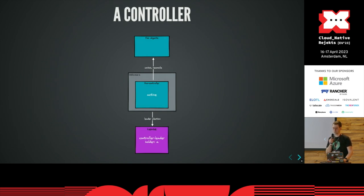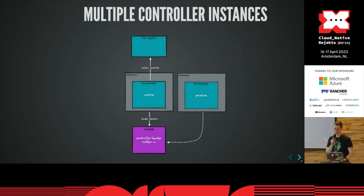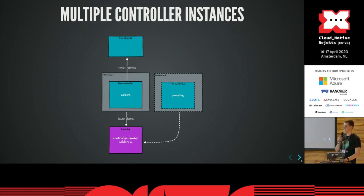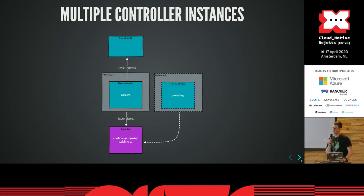Let's imagine a simple controller. It reconciles some foo objects, runs in some pod, and it does some leader election. And there we have the problem. The leader election is supposed to ensure there's only one active controller instance at a time. So if we add another controller instance, it will be in passive mode. This is active-passive HA. This is not horizontal scaling, because there's only one active controller instance at a time to prevent any conflicting actions. We can do fast failovers with this topology, but we can't scale up the capacity of the controller. So if we get even more objects, we are still limited by the single instance — we can only scale it up vertically.